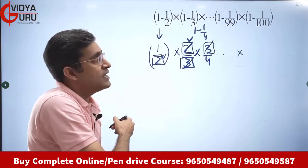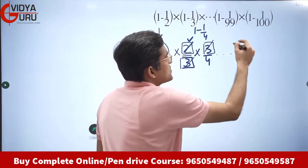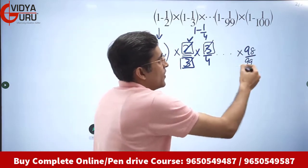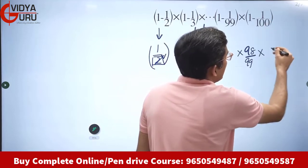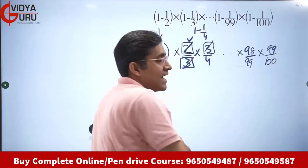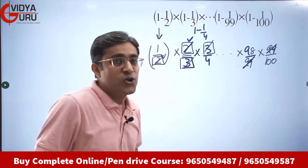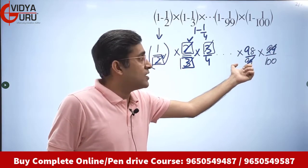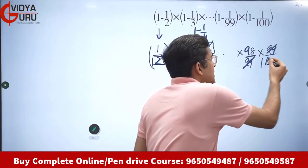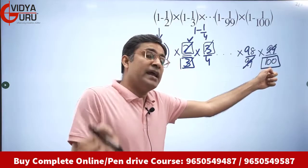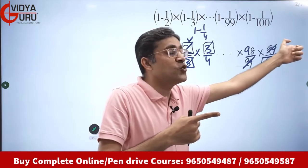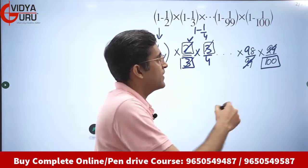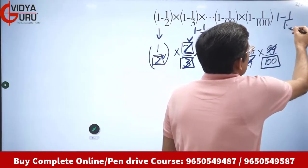Three will also get cancelled out. From the second last term, 1 − 1/99, I get 98/99. The last term is 1 − 1/100, which gives me 99/100. So the 99 gets cancelled. The denominator 100 would normally be cancelled by the numerator of the next term — but do we have a next term?